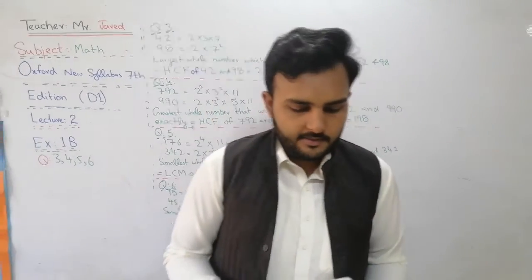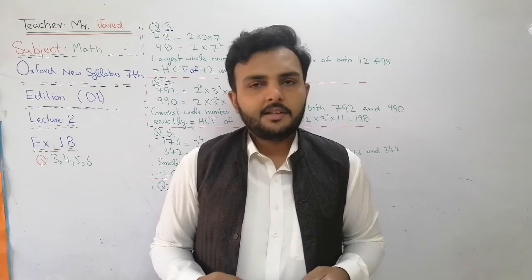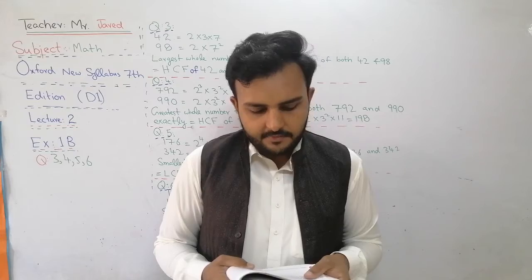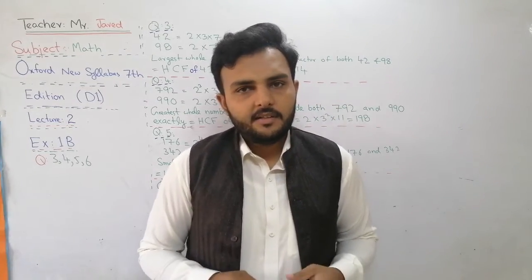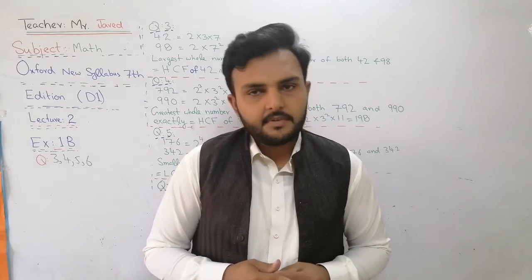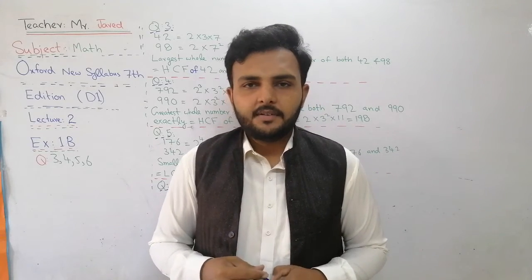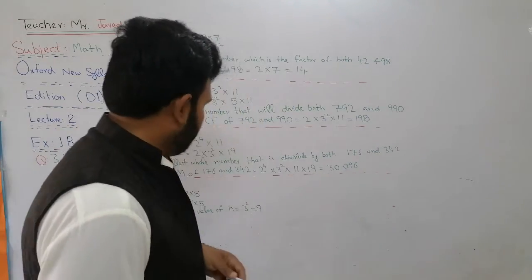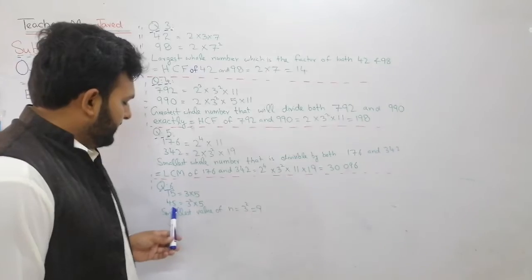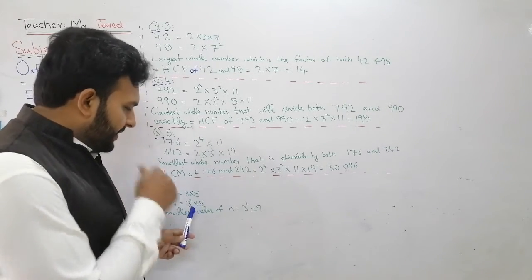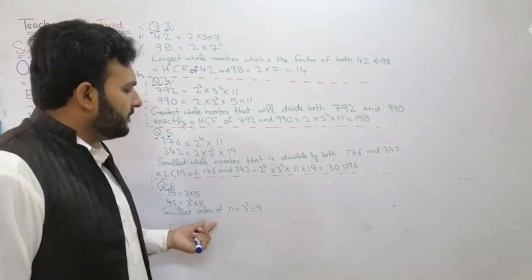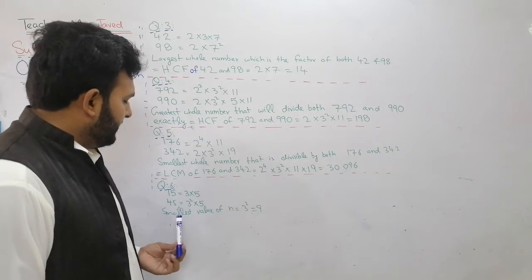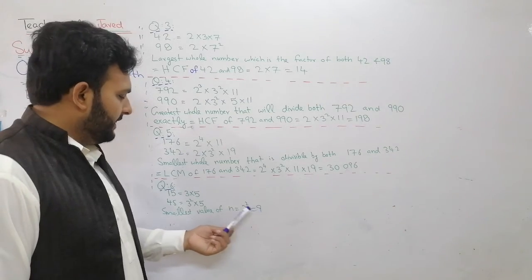Question number 6 is very important and has a little bit of logic. Find the smallest value of n such that the LCM of n and 15 is 45. We don't know what n is, but we know LCM(n, 15) = 45. We take the prime factors: 15 = 3 × 5, and 45 = 3² × 5. For the LCM to be 45, the smallest value we take for n is 3² = 9. So 9 is the smallest value of n.